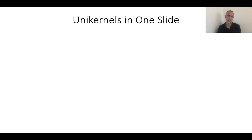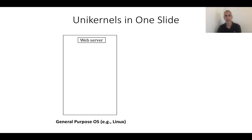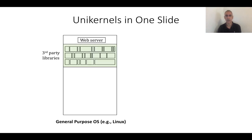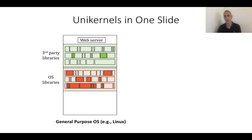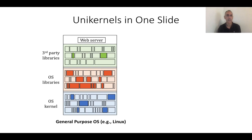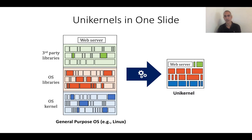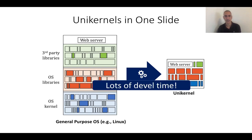To give you more details about what a unikernel actually looks like: imagine you want to run just a web server. On a general purpose OS, you're going to have many third-party libraries even though the web server only needs a couple. Under that, you have OS libraries — same issue, lots in the image but you only need a few. Under that, you have the OS kernel with lots of things packed in. What you'd really like is to take just those needed bits and put them in a custom software stack that only has what the web server needs. That's what a unikernel is. The problem is that transformation has required lots of development time because you have to hand-craft each unikernel to the needs of an application.